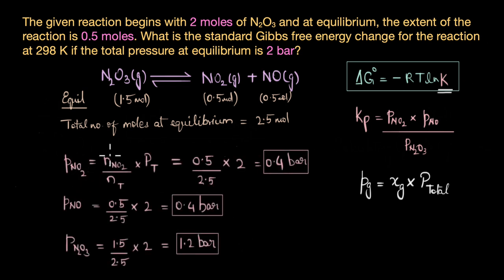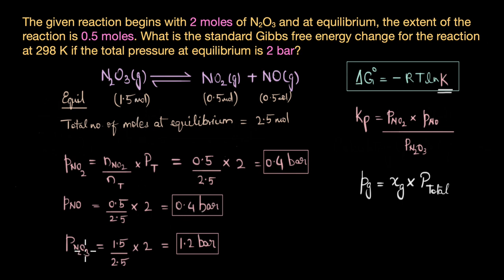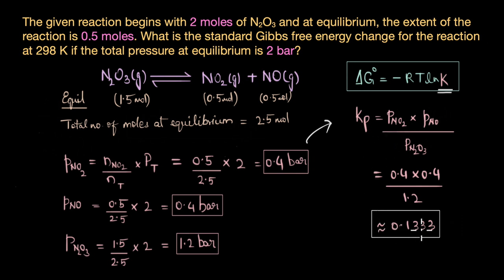The partial pressure of NO₂ is its mole fraction — which is 0.5 divided by 2.5 — multiplied by the total pressure of 2 bar, giving 0.4 bar. Since the number of moles of NO is the same as NO₂, its partial pressure is also 0.4 bar. The partial pressure of N₂O₃ is 1.2 bar. Substituting these partial pressures into the Kp expression gives approximately 0.1333.